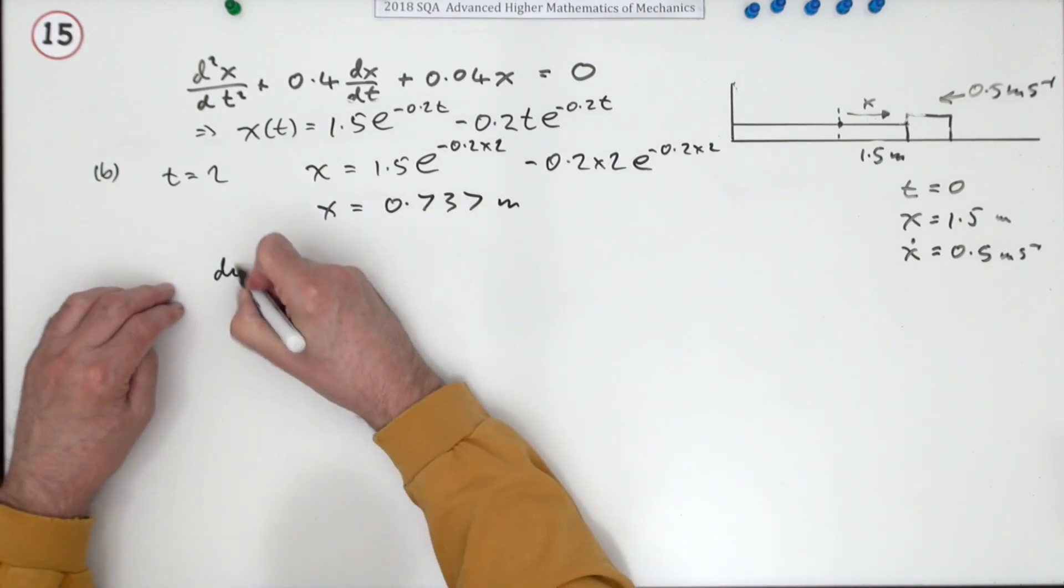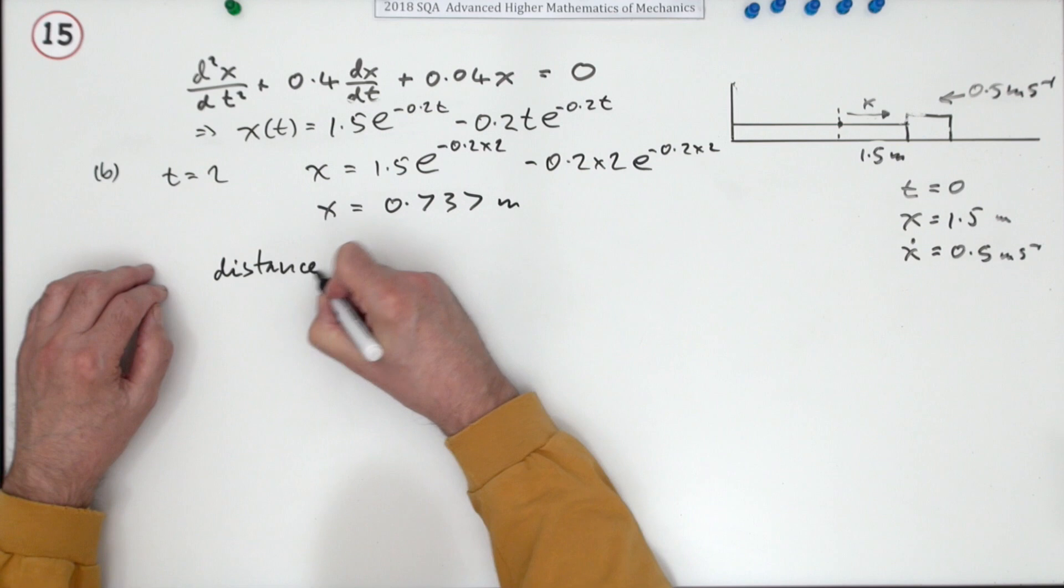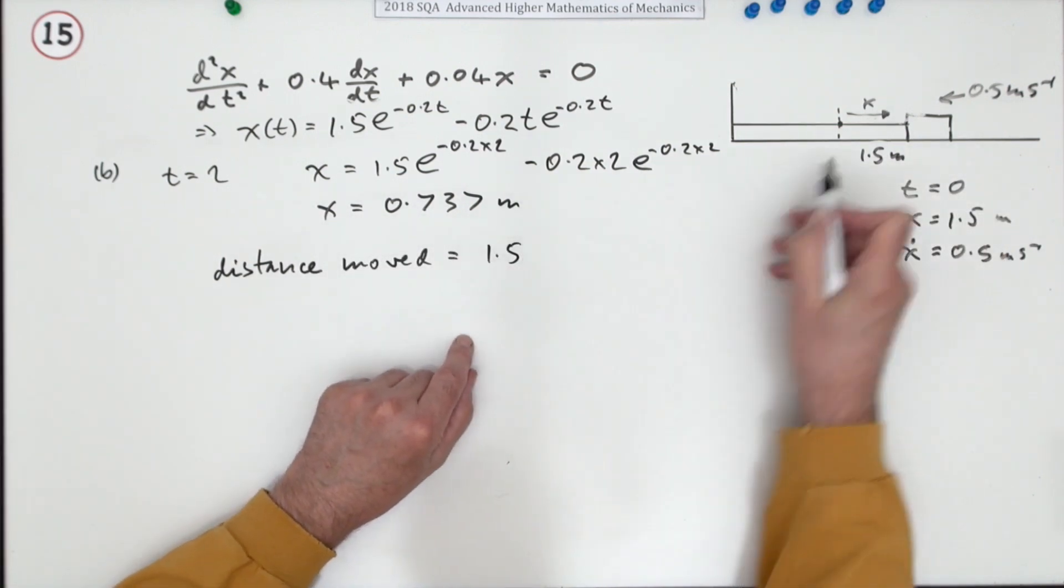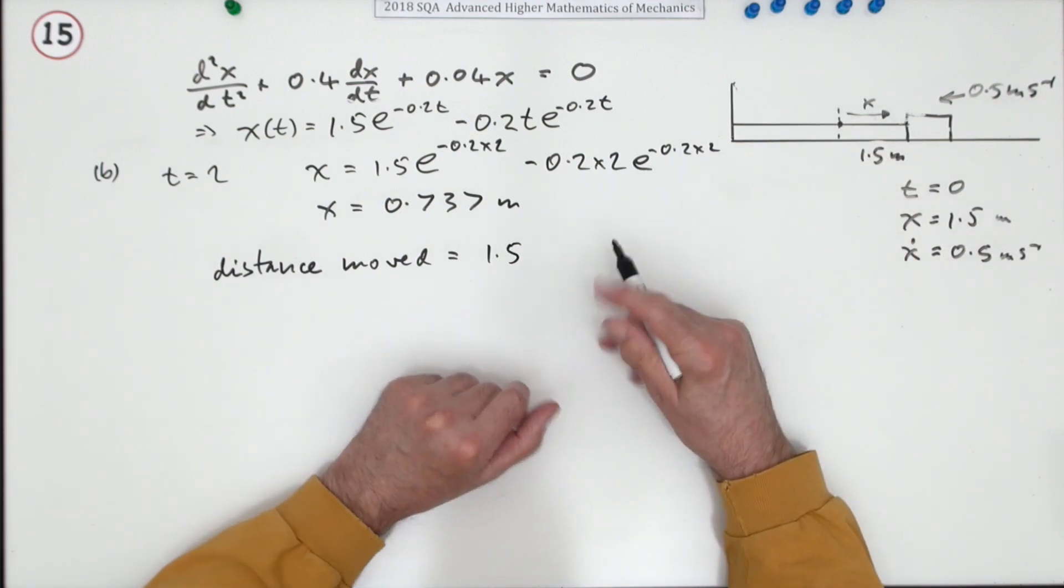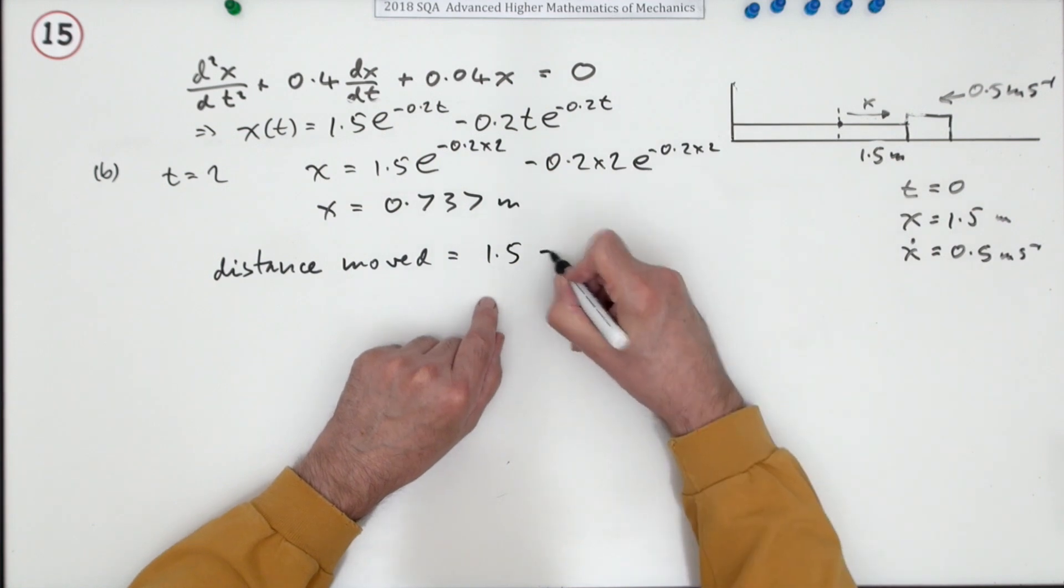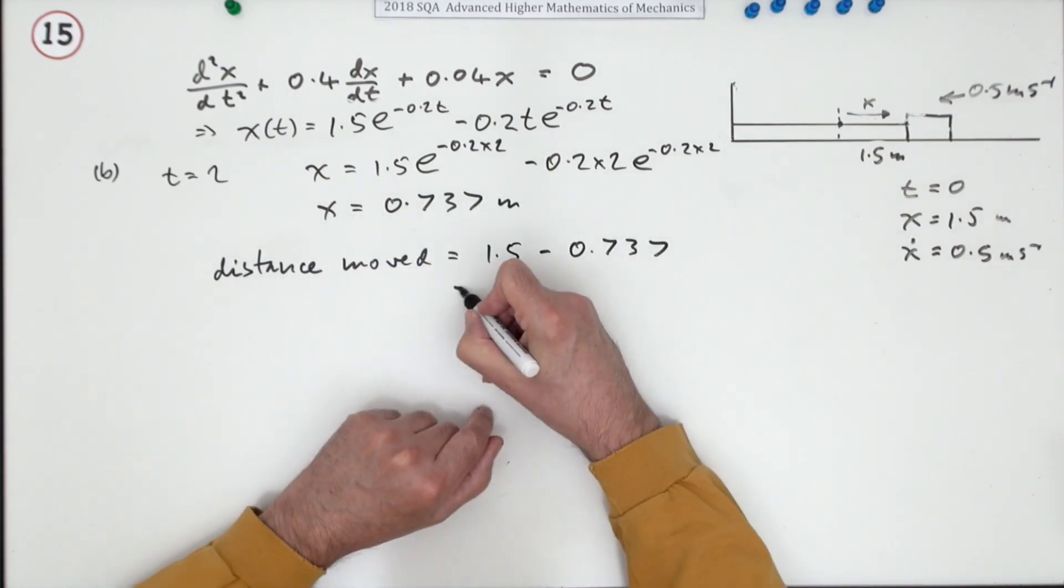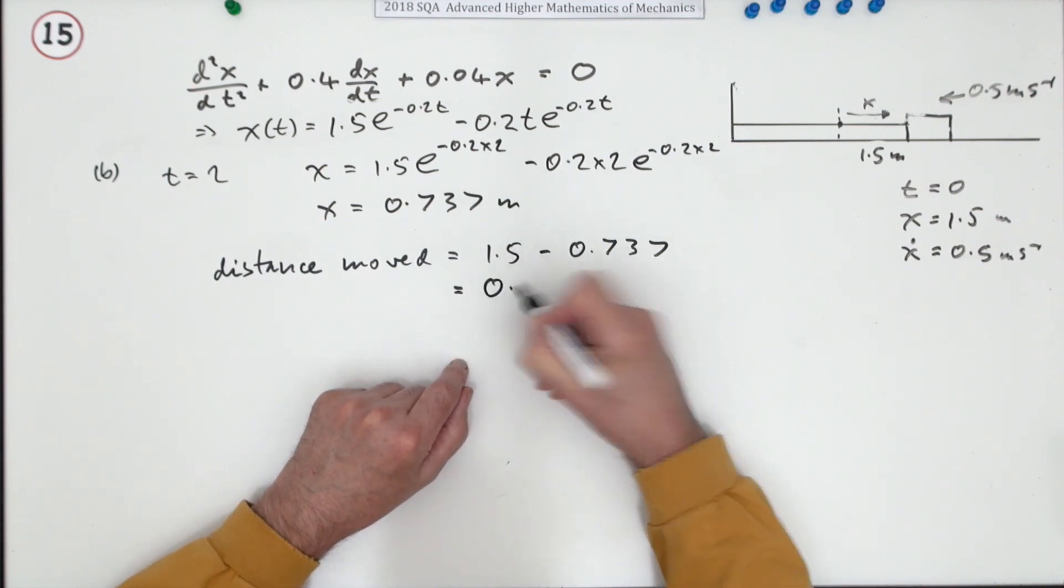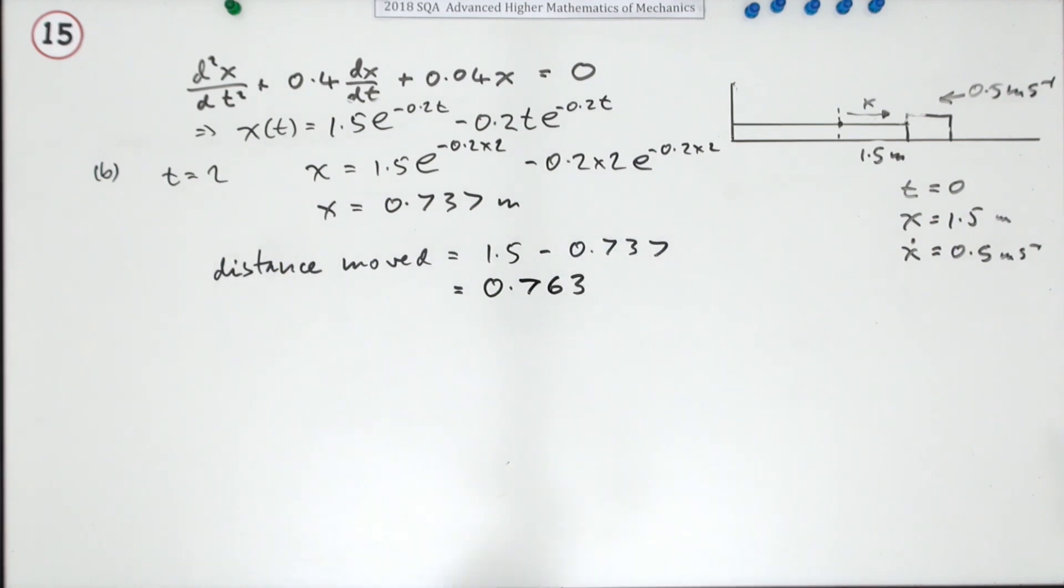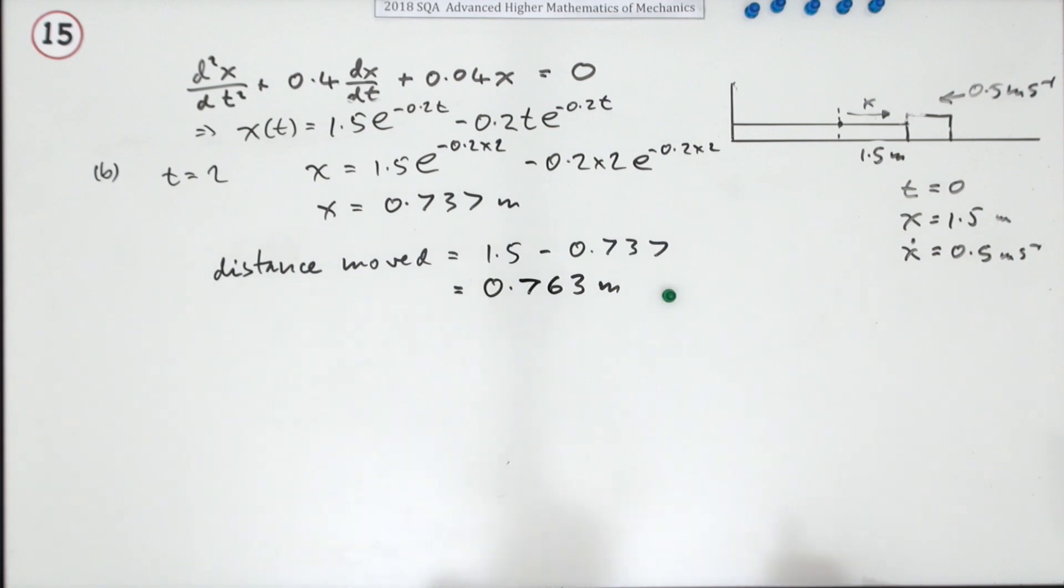So the distance moved, and there's no name for this, there's no variable name for this, so I'll just have to write it: distance moved. It was originally 1.5 meters from that equilibrium position, or in this case from its final resting place, minus the 0.737, which means the answer is going to be 0.763 meters. And all of that for one mark.